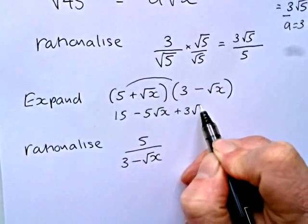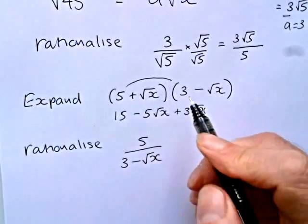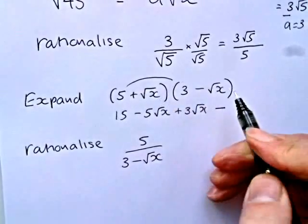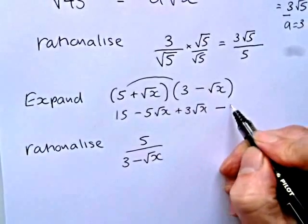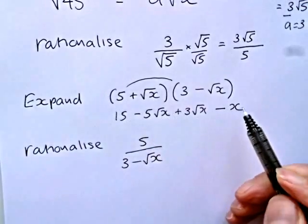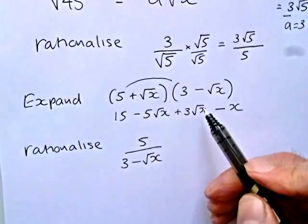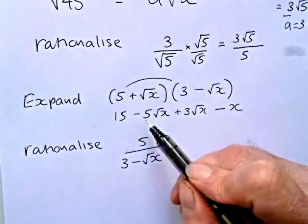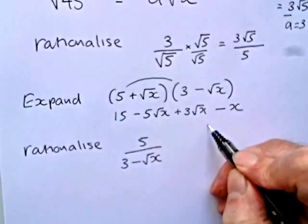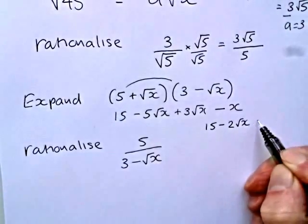And then we have plus root x times minus root x. So the plus times a minus gives us a minus. The root x times root x gives us x. So now we can still simplify this a bit further. We have got minus 5 root x plus 3 root x. So these are like terms. So you've got minus 5 plus 3, which will give us minus 2 root x.